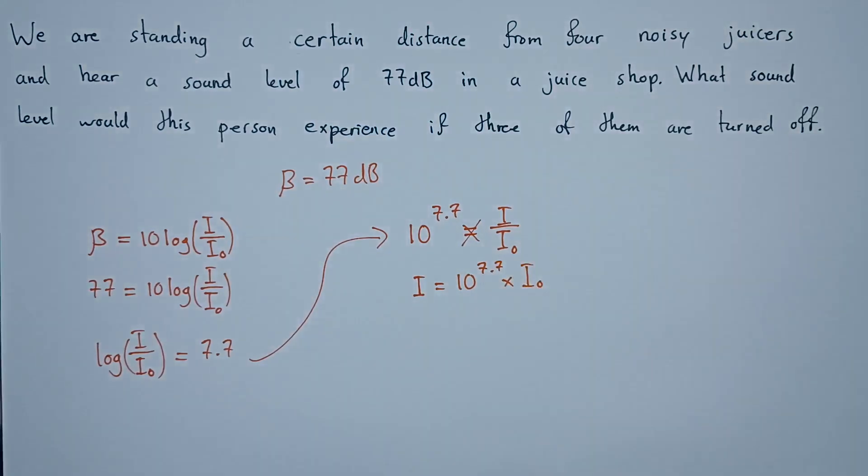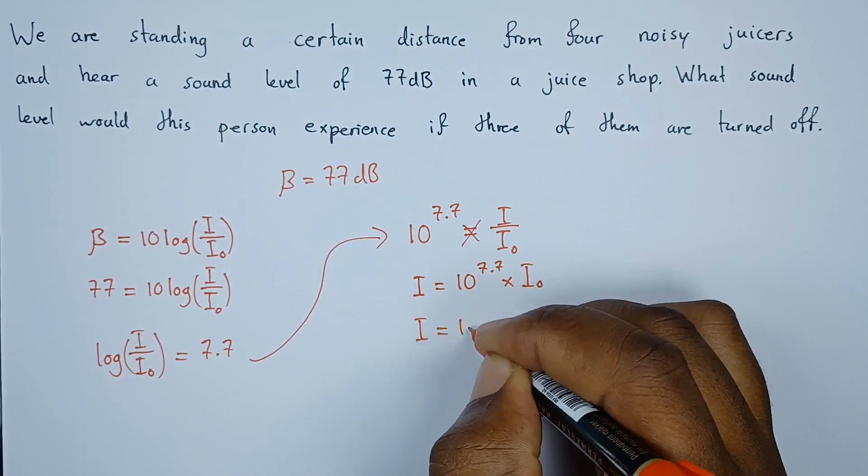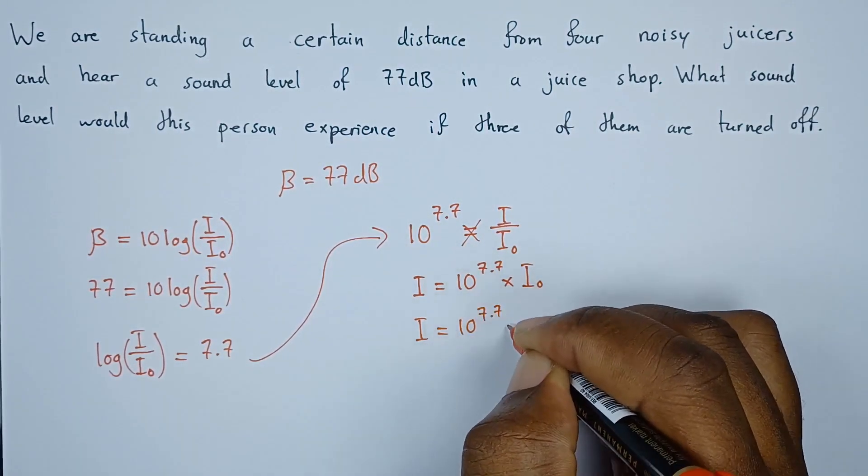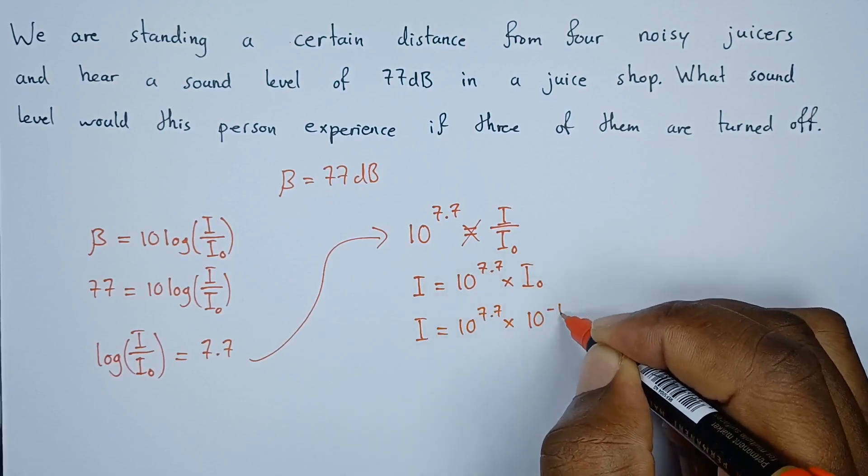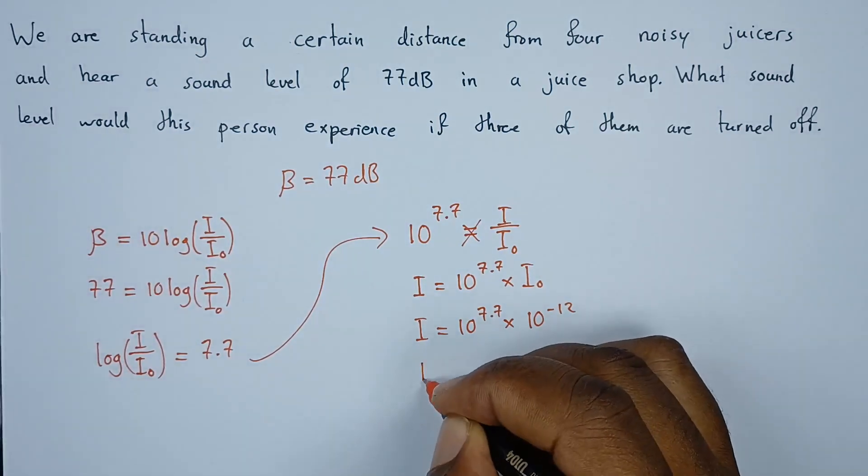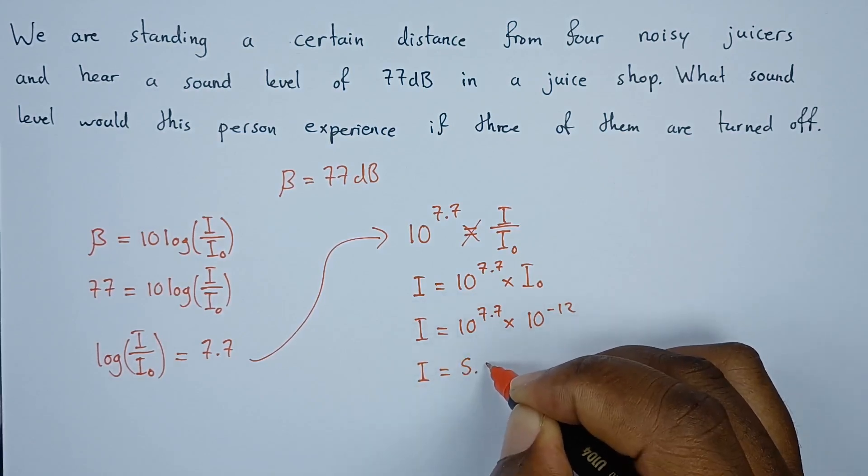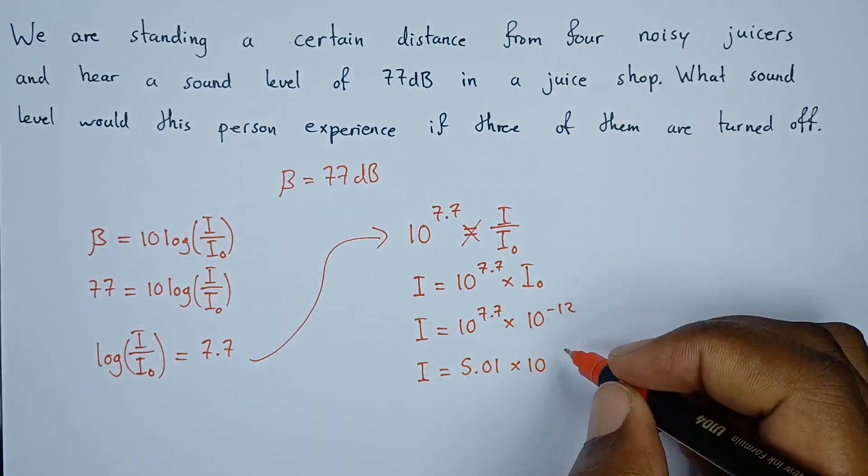The threshold of intensity I naught has a value which is 10 to the power negative 12. If we multiply the two, we get I as 5.01 times 10 to the power negative 5 watts per square meter.